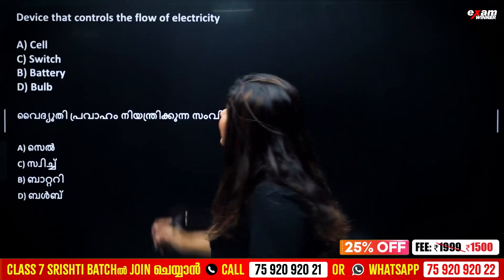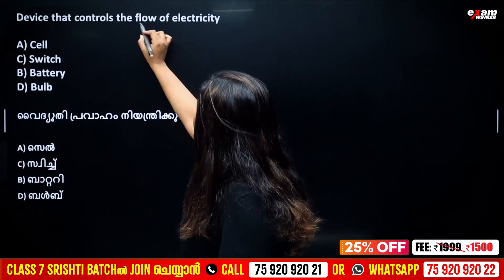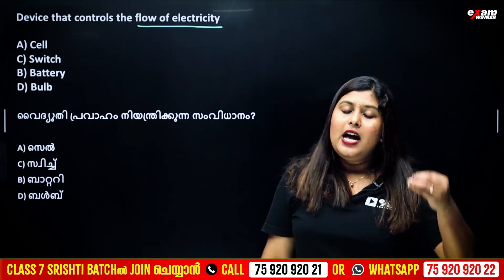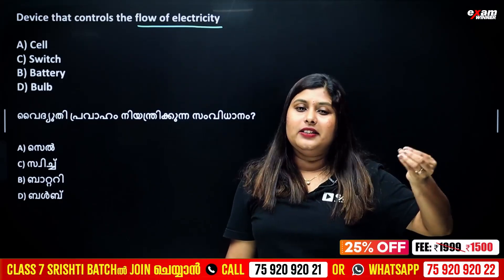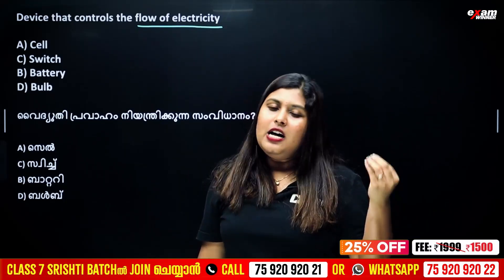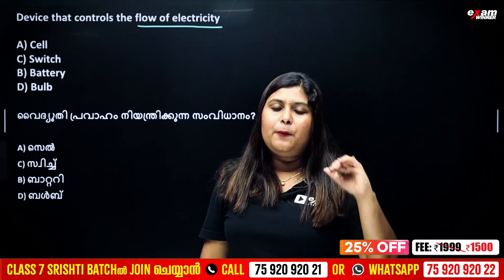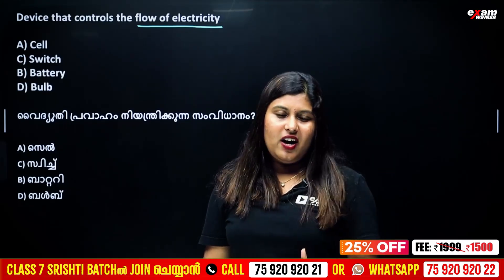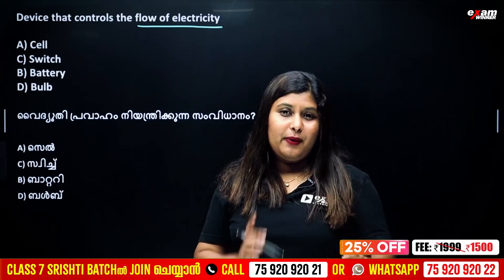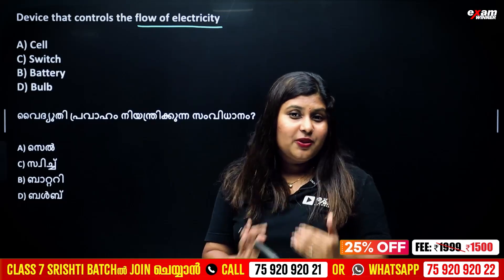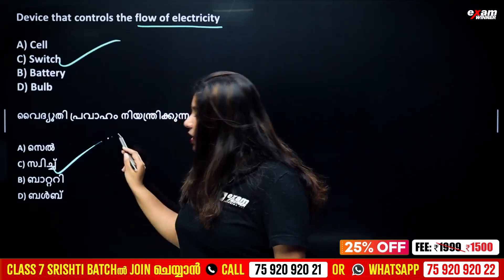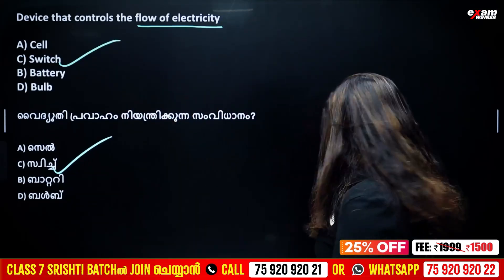The device that controls the flow of electricity — how does the flow of electricity work? The control is the switch. When we switch on the light and switch off, the current is controlled. Switch on, switch off — that is the correct answer.